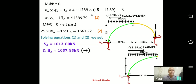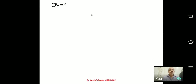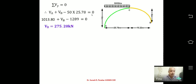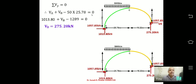From ΣFX = 0: HA − HB = 0, so HB = 1057.85 kN towards left. From ΣFY = 0: VA + VB = 1289, giving VB = 275.2 kN. All reactions are determined. Now finding maximum positive and negative bending moments.